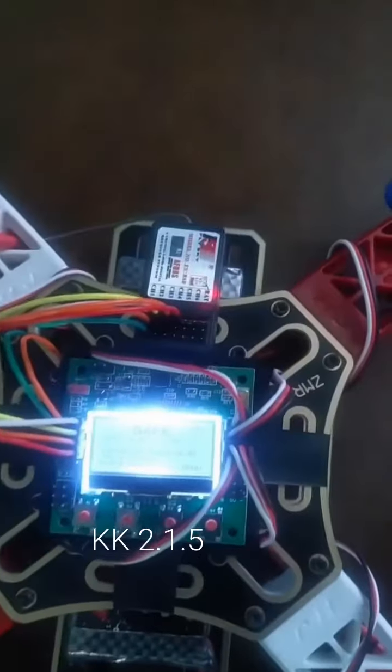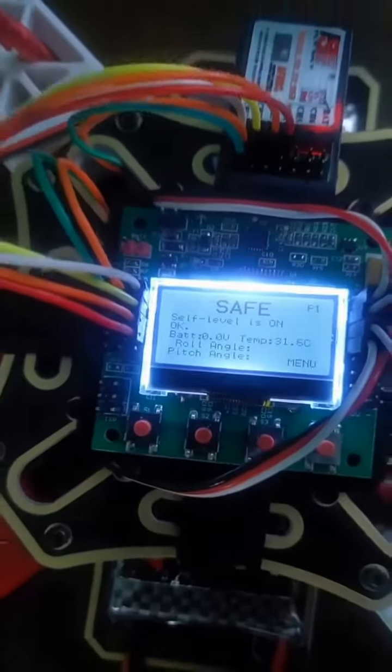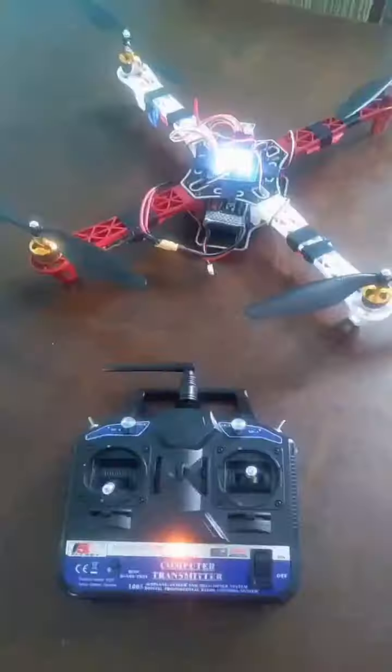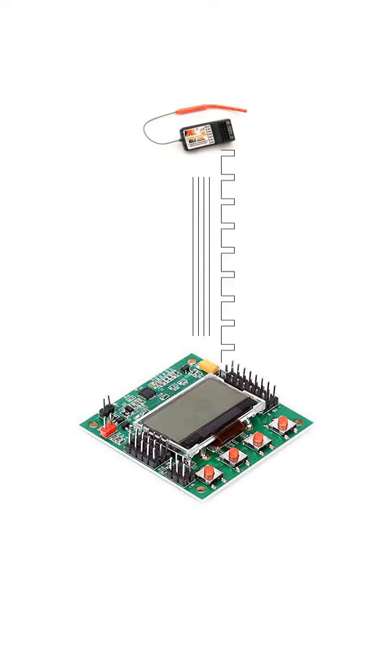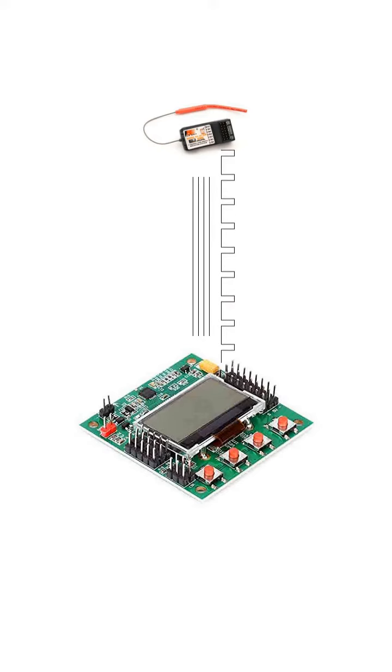Let's try to autonomously control our quadcopter from our Raspberry Pi Zero by using Python scripts. This is the FSR6B receiver interfaced with the KK2.1.5 flight controller board. The receiver is going to send PWM signals to the flight controller based on the movement of the joysticks from the transmitter.